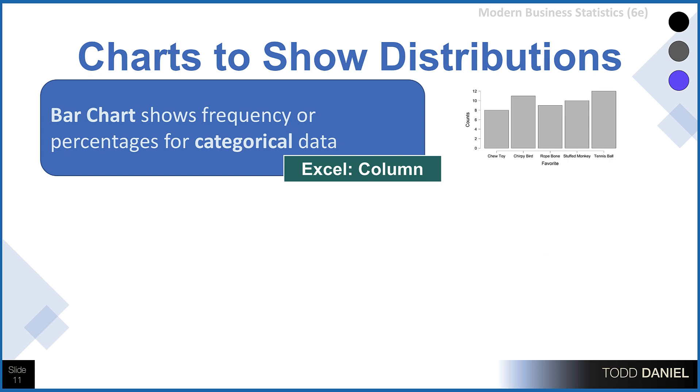Well, in this final section, I want to review the types of charts that we used to show distribution. For categorical data, I recommend using a bar chart to display either the frequency or the percentages within the categories. In Excel, we use the column chart option to create a bar chart.